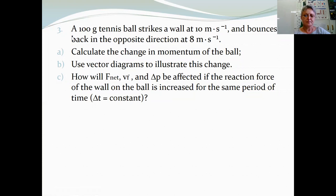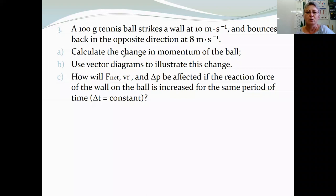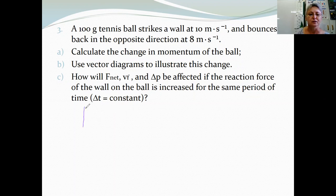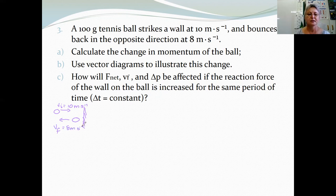Our example is on a tennis ball hitting a wall and bouncing back. A 100 gram tennis ball strikes a wall at 10 meters per second and bounces back in the opposite direction at 8 meters per second. It's always a good idea to sketch the situation — the ball comes towards the wall at 10 m/s and bounces away at 8 m/s, so some of the ball's kinetic energy is lost during this collision.